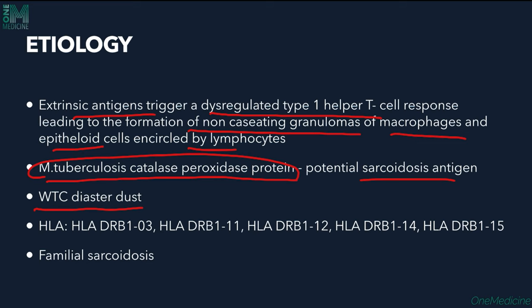There are certain HLA subtypes which are associated: HLA-DRB1*03, 11, 12, 14 and 15, of which HLA-DRB1*03 is most important. Familial cases have also been noted.